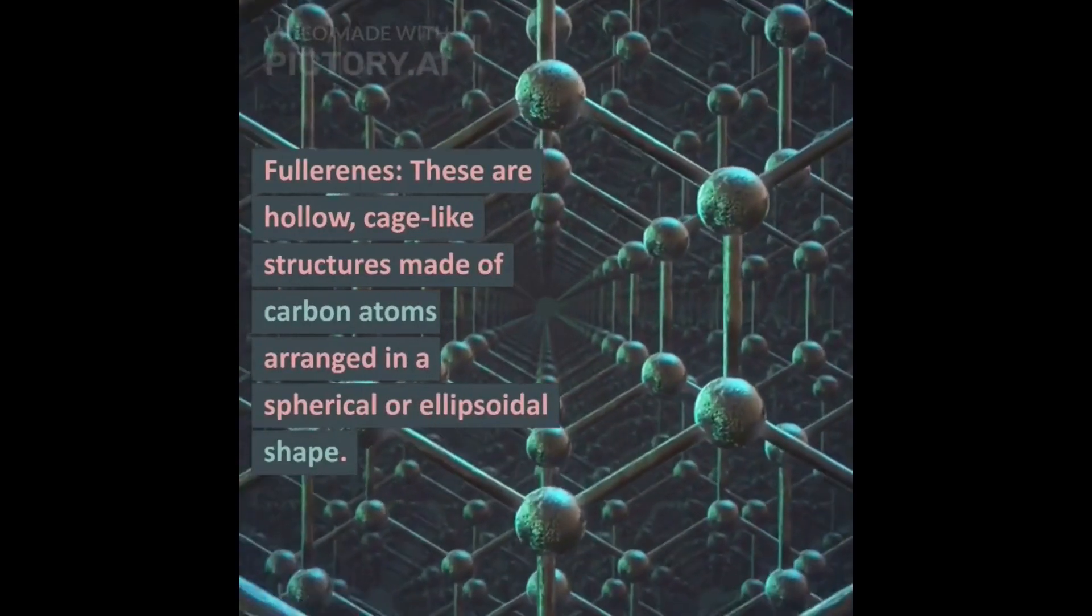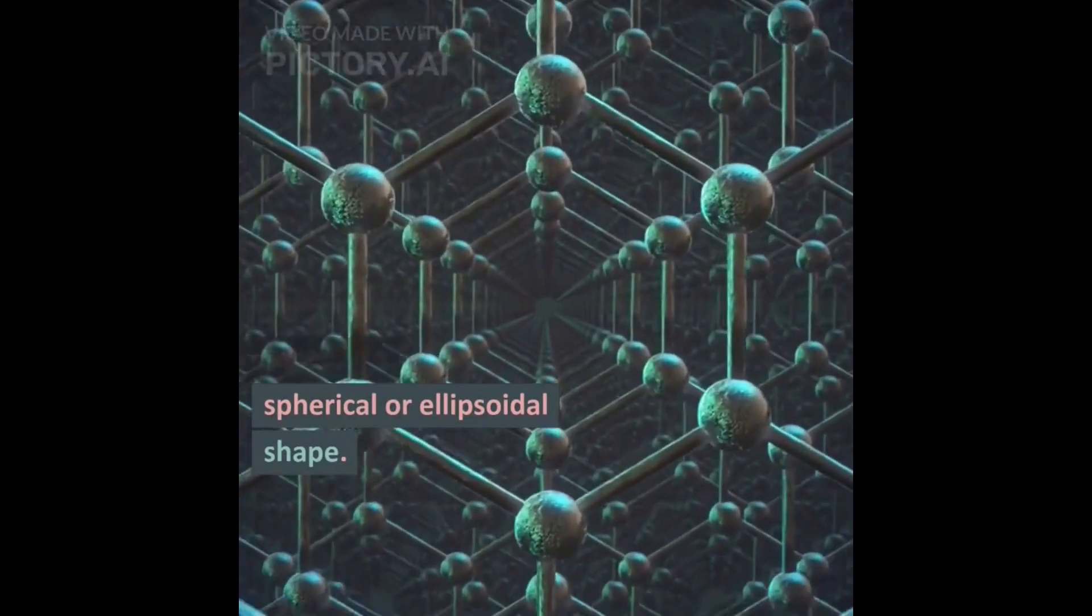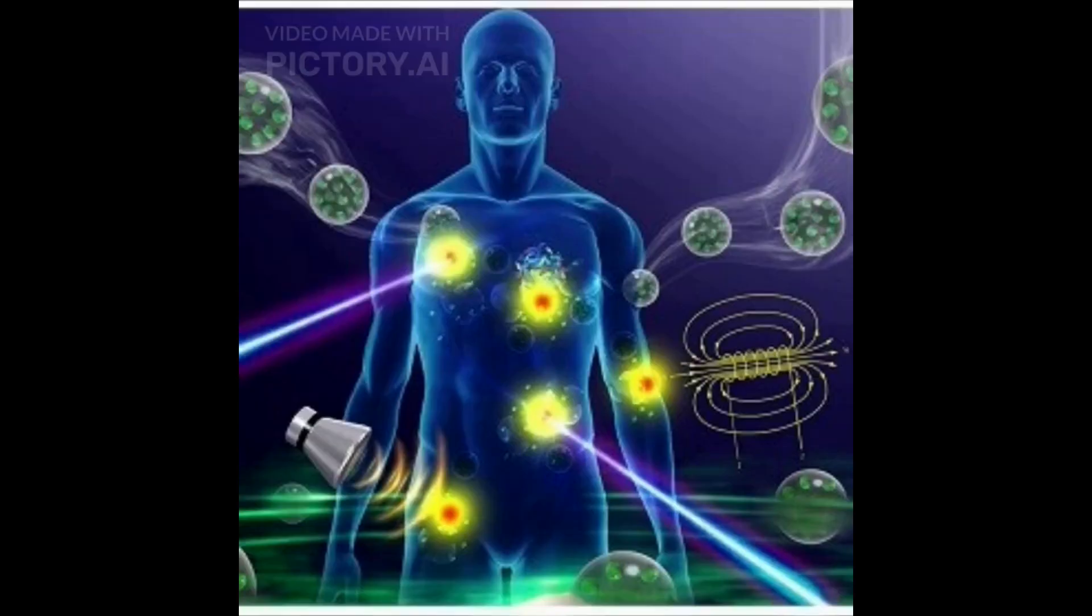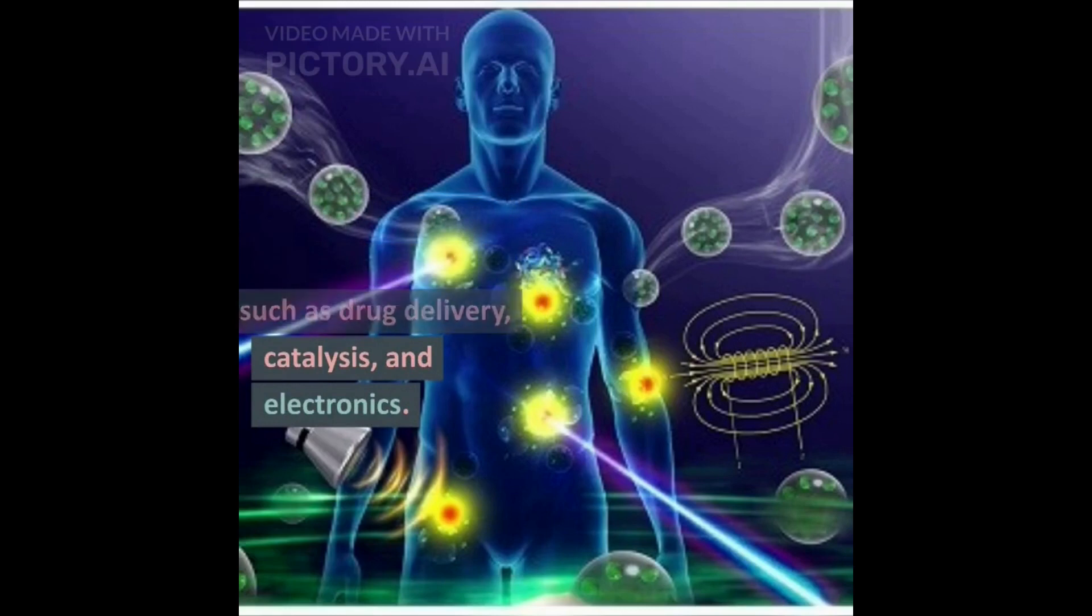Next one is fullerenes. These are hollow, cage-like structures made of carbon atoms arranged in a spherical or ellipsoidal shape. They have potential applications in fields such as drug delivery, catalysis, and electronics.